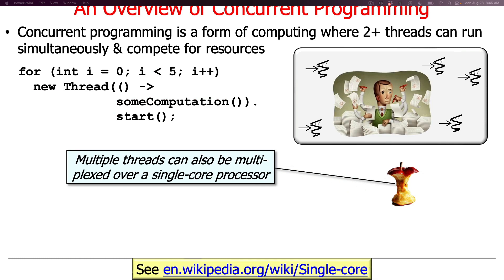You can also have multiple threads running on a single-core processor, with all threads multiplexed over that single core. It's like everyday life where there's one of you, but you might be doing multiple things simultaneously — talking to someone, texting, checking email — essentially time-slicing yourself and multitasking.